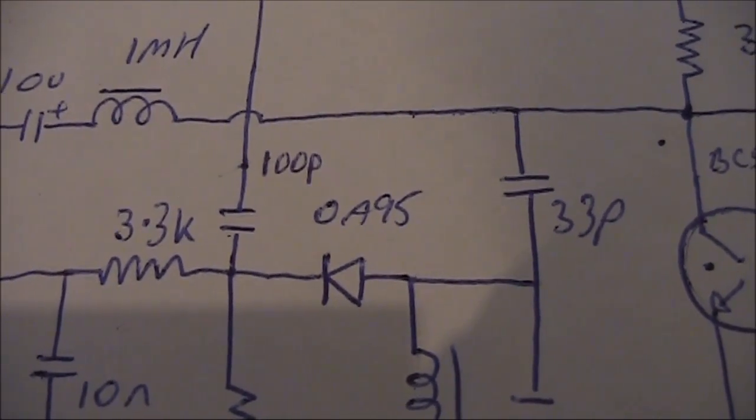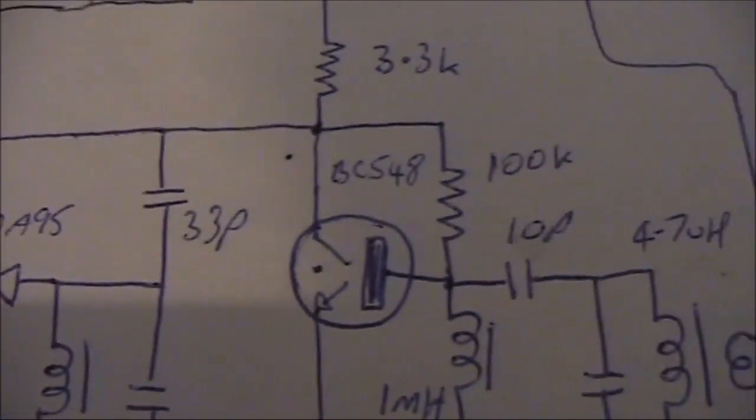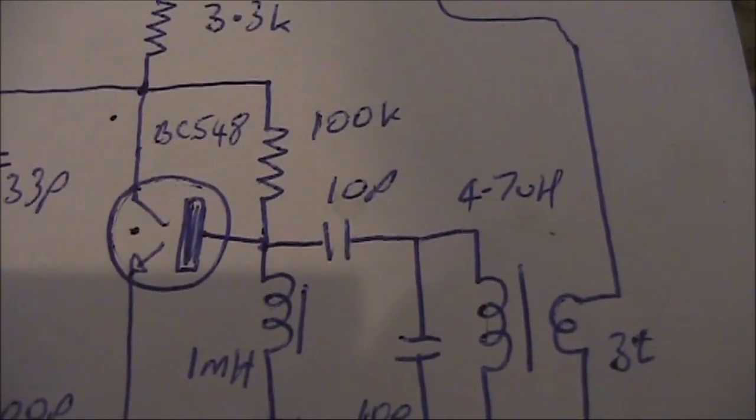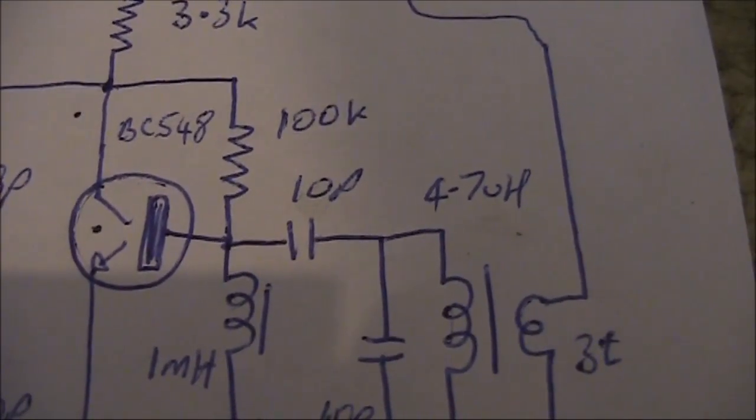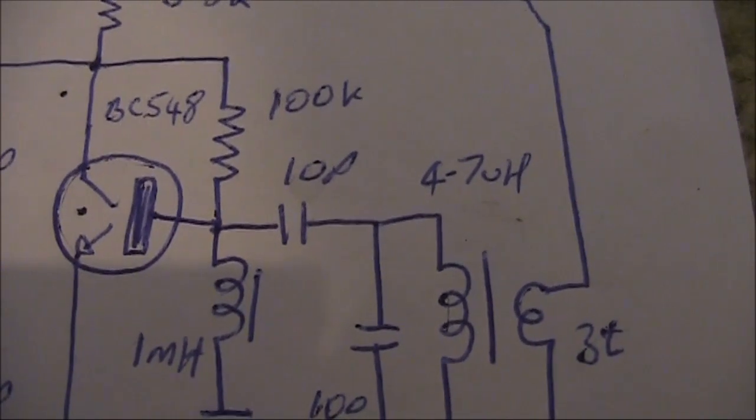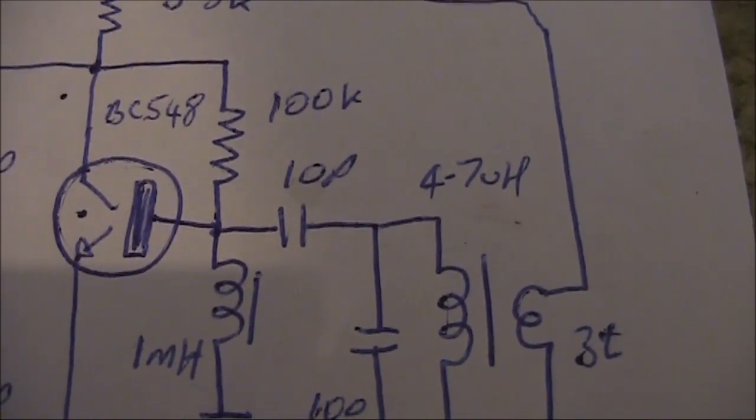If there are issues with breakthrough from broadcast stations, then you can try changing values of things. Maybe coupling capacitors need to be a smaller value.